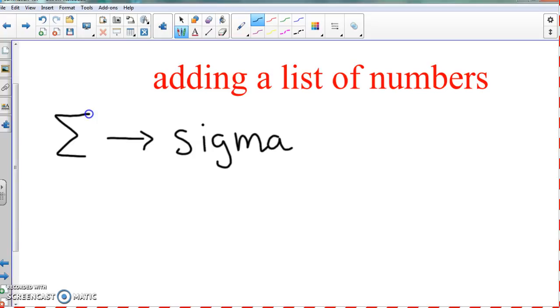So this one is called sigma, sigma notation. Now if you want to draw it, turn your paper and do a sideways M, that's fine, or you can do a sideways E, whichever. It's up to you.